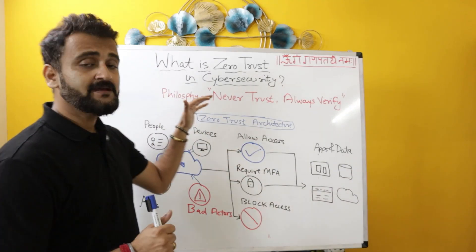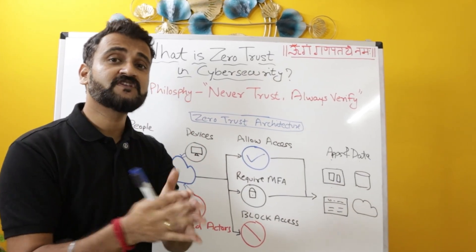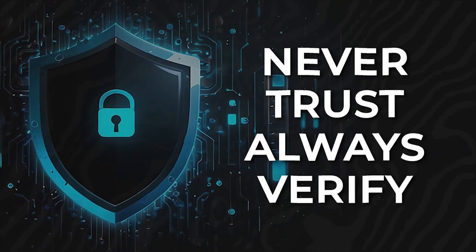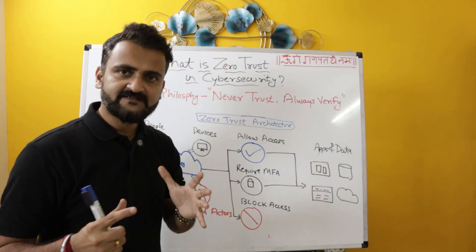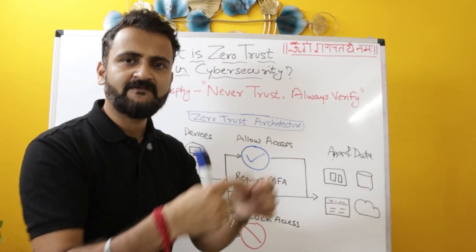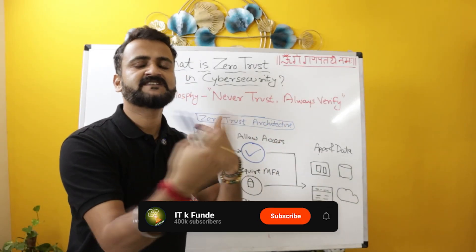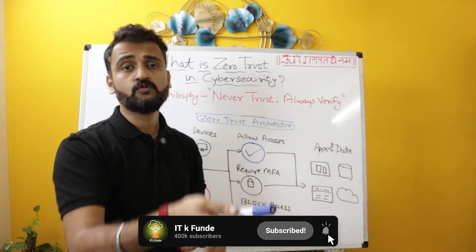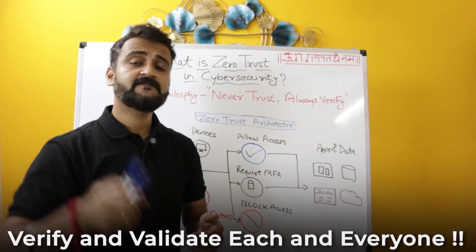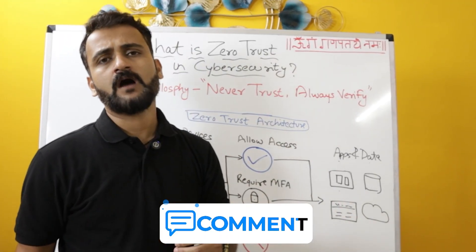Security in itself is a very big thing, but in cybersecurity, nowadays people are focusing on zero trust. What is zero trust? The philosophy of zero trust is: never trust, always verify. Previously, if two devices were within a private network, the trust was implicit — it was assumed that these two are safe devices to talk to each other. But not anymore. With moving to the cloud, zero trust says we have to verify and validate each and everyone, regardless of whether they are within the network or outside the network.